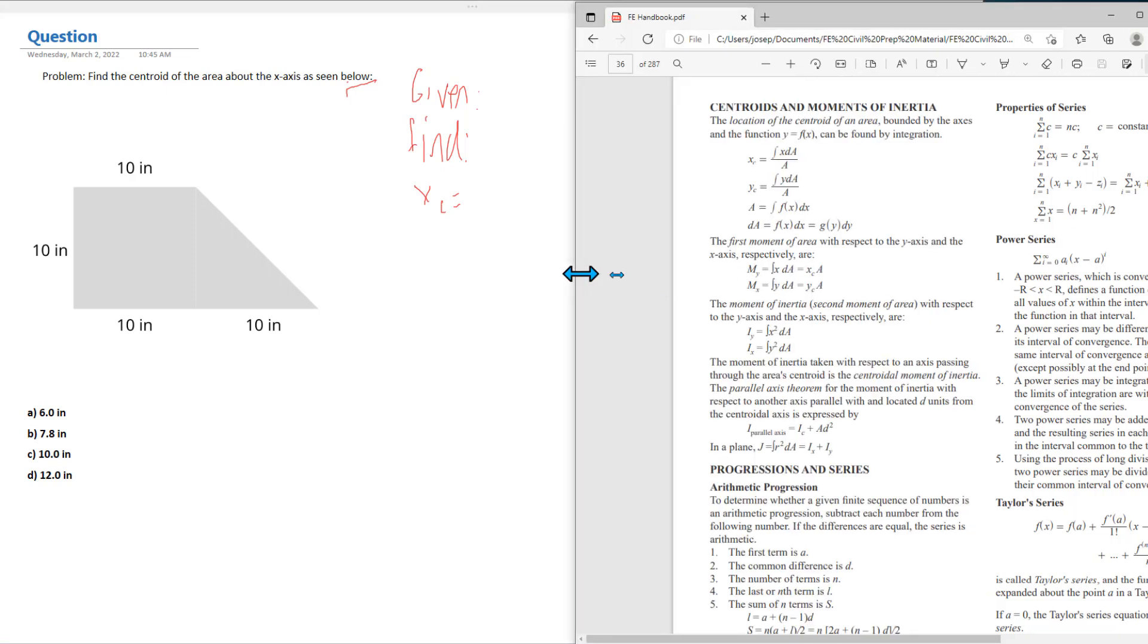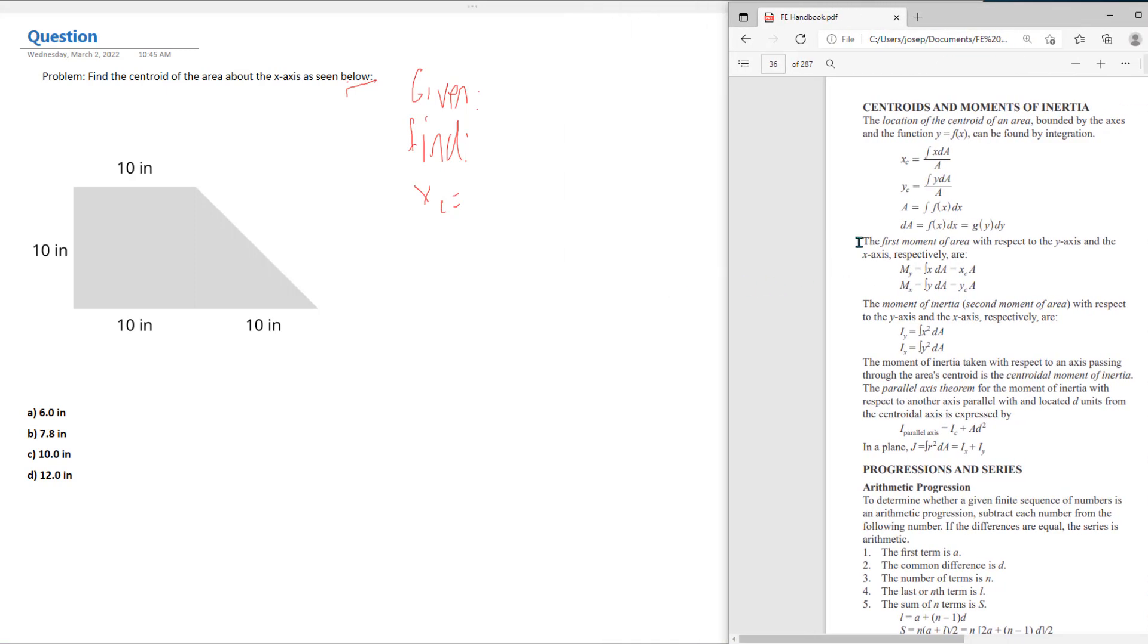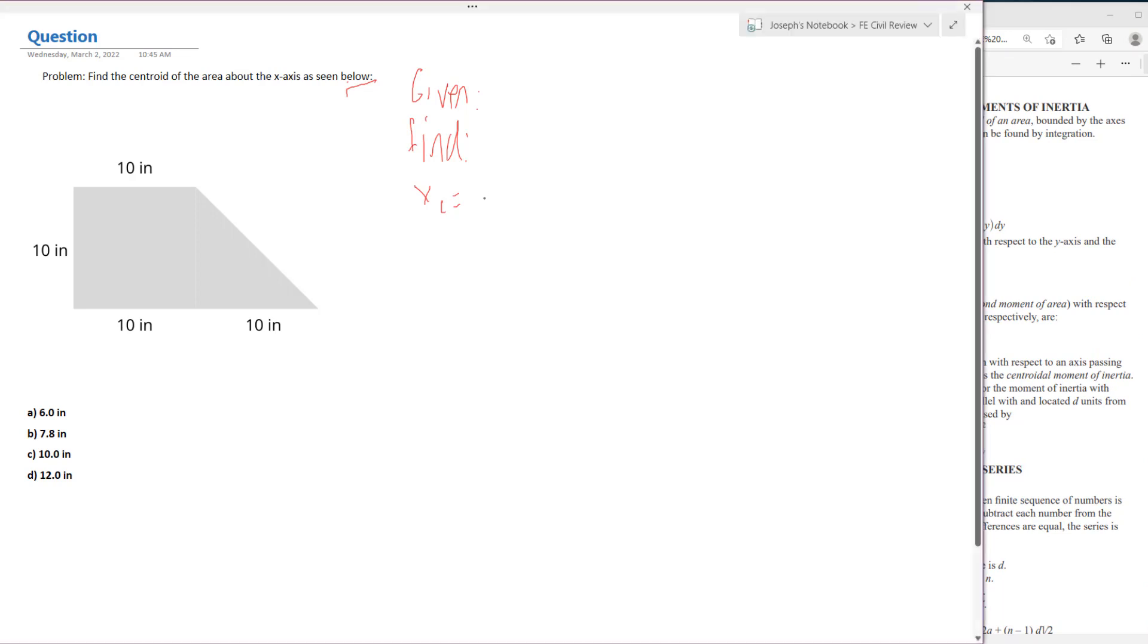It gives us the equation right here. We can see that the sum of x da over a is going to help us find the centroid over the total area. What that's telling us is it wants the centroid of the specific shape. We have two shapes here: shape one and shape two.